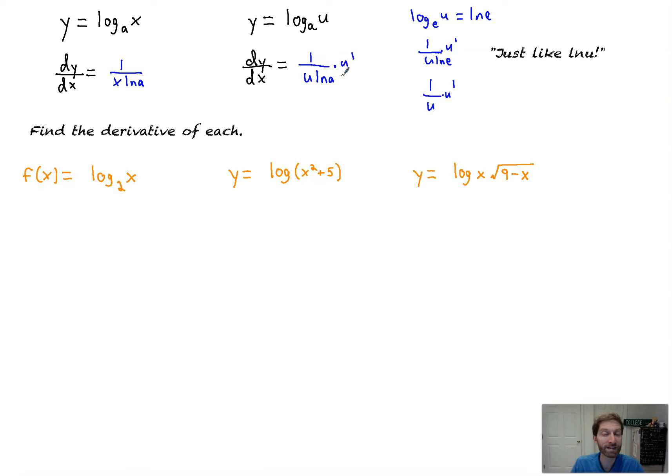But backing up, this is the general formula. So it's 1 over stuff, d stuff, but you got the ln of whatever the base is down there. So memorize it, but notice the relationship with what you've already learned to make those connections. Now, I will show you at the end of this video why this formula works that way, like where it comes from. But let's use it first.